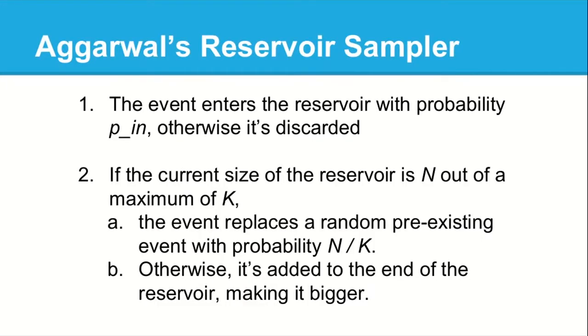Once we've decided an event is going to enter the reservoir, we look at the current ratio — the current percentage of the reservoir that's full. If the reservoir is 10% full, there's a 10% probability the event replaces an event already in the reservoir, and a 90% probability it's just added to the end, making the reservoir bigger. When the reservoir is 99% full, every new event has only a 1% chance of making it bigger and a 99% chance of replacing an older event.